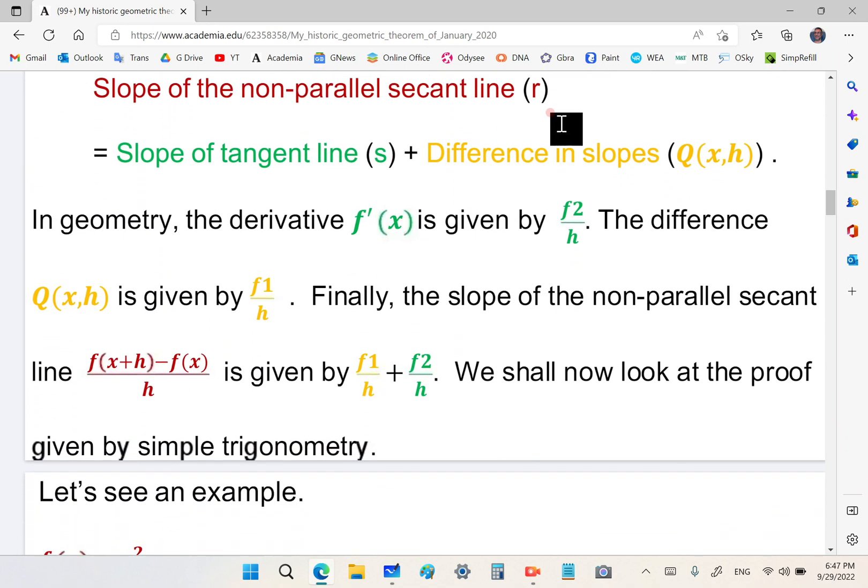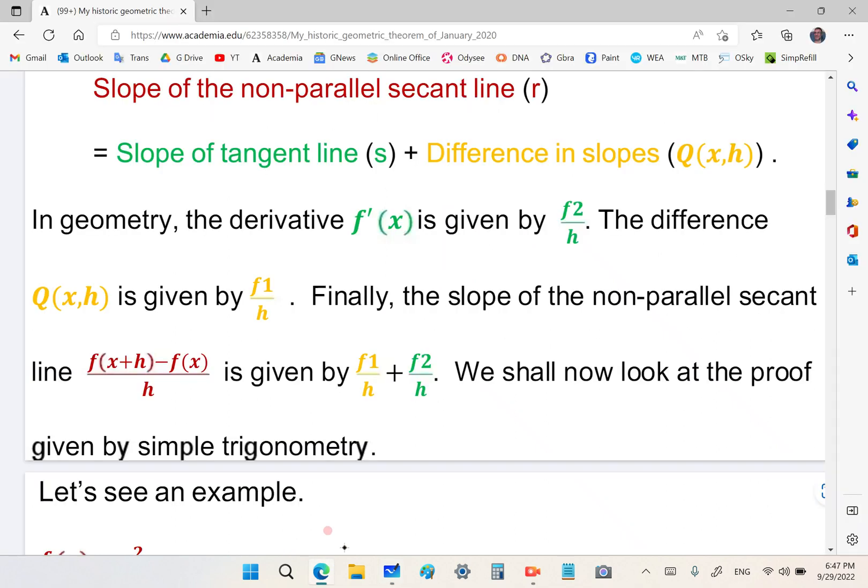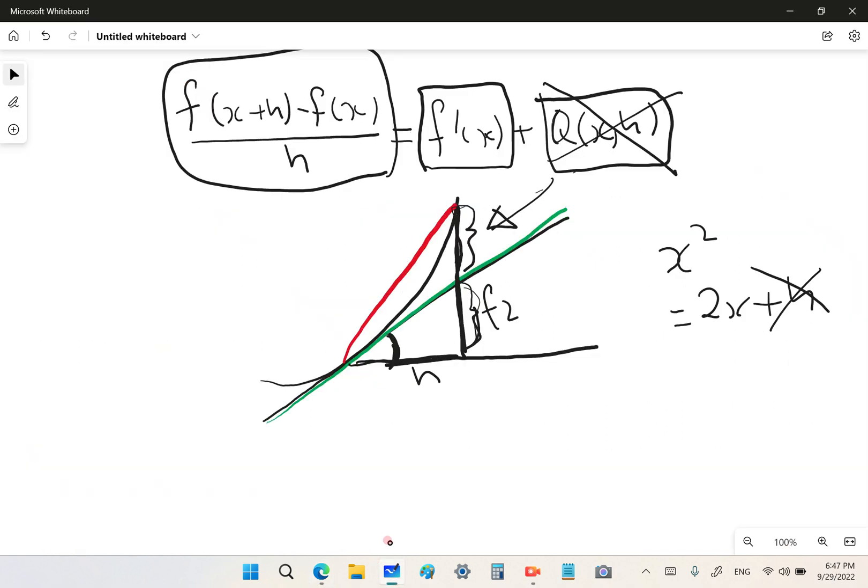And in geometry, the derivative is just simply f2 over h. If we look at this part here, this here is f2, and this is h. And f1, if we go back here again, this part here is f1, and so the whole line is f1 plus f2. And f1 plus f2 over h is this finite difference.